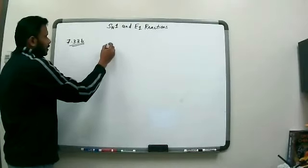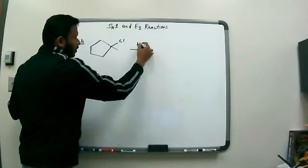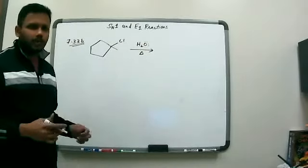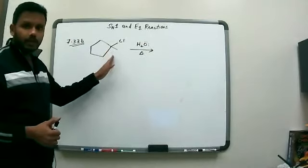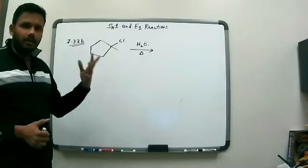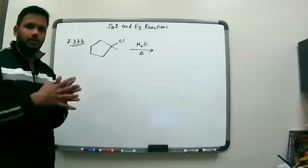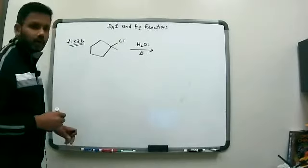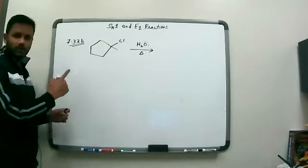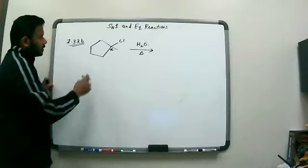We have to draw all possible products from this reaction. In this particular case, what I see is a tertiary alkyl halide with a weak nucleophile and weak base with heat — that's a hint we're talking about an SN1 and E1 reaction, and there's no way to tease these apart, so they're happening simultaneously. To figure out what products we can expect, you first analyze the starting material. That's my alpha carbon — the one connected to the halogen — and I notice the molecule is symmetric.